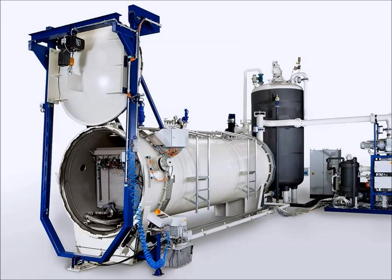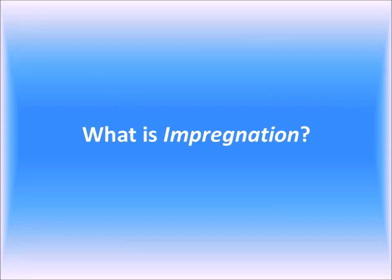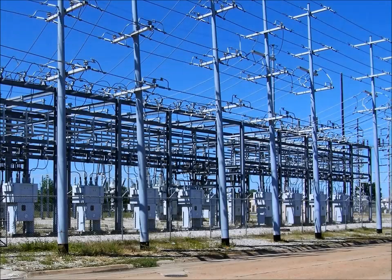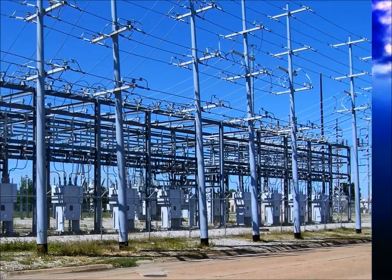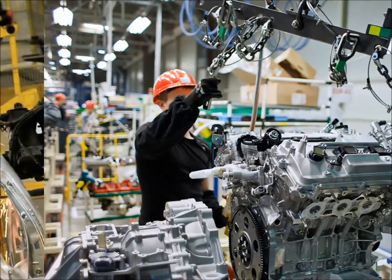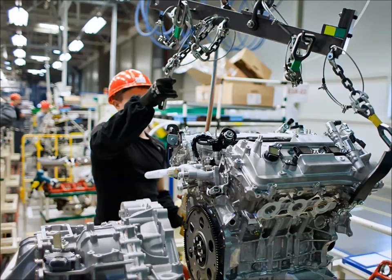Welcome to a brief presentation on electrical engineering impregnation systems, brought to you by TechnoExpert. Impregnation is simply the process of sealing porous materials with a resin, and is performed in order to improve the function of insulation systems. It is primarily used in the electrical engineering, aviation, and automotive industries. For our purposes, we will be discussing the impregnation process for electrical machines such as motors and generators.